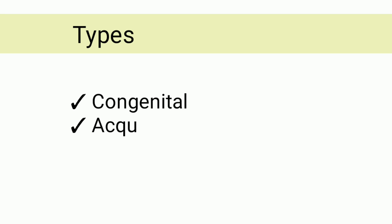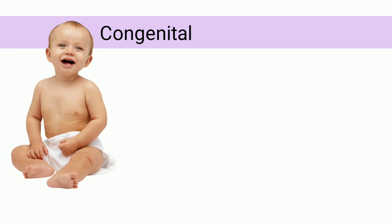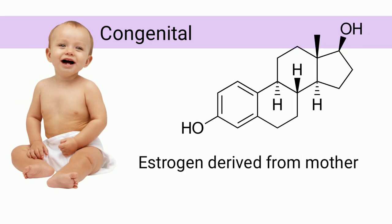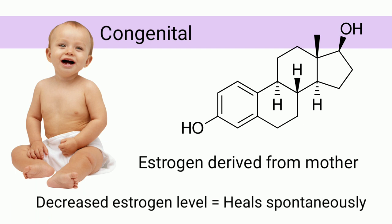According to etiology, cervical erosion is of two types: congenital and acquired. Congenital cervical erosion occurs just after birth due to high levels of estrogen derived from the mother. The columnar epithelium of the endocervix extends beyond the external os. As the estrogen level falls, this erosion heals spontaneously.